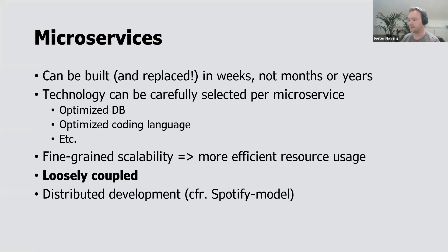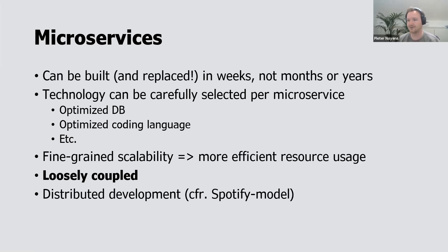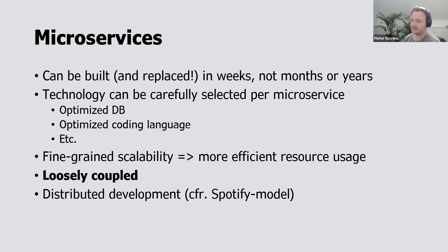It's easier for multiple teams within one organization to work efficiently on every service and integrate it all together if they have good agreements on what the interfaces should be. Another big advantage is that for every microservice — for example a payment service or an account service — you can choose the most optimal database or coding language for that functionality. Every team can decide that for themselves because they know best what's most appropriate for their feature.